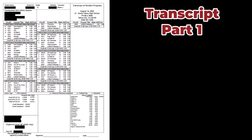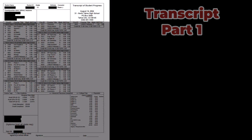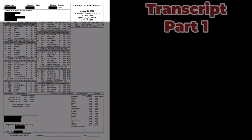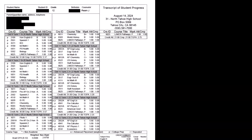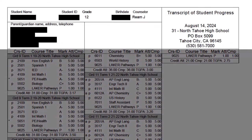The first of the four components is the top section, which has some identification information. In this example it's blocked out to protect privacy, but you'll see the student name, a student ID number, a birth date, who your counselor is, and also address and telephone information.